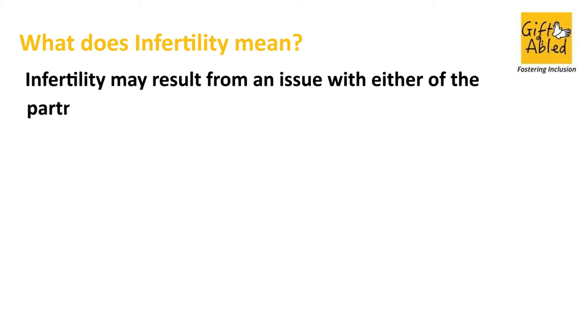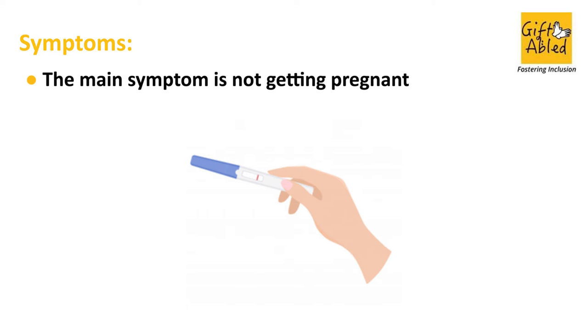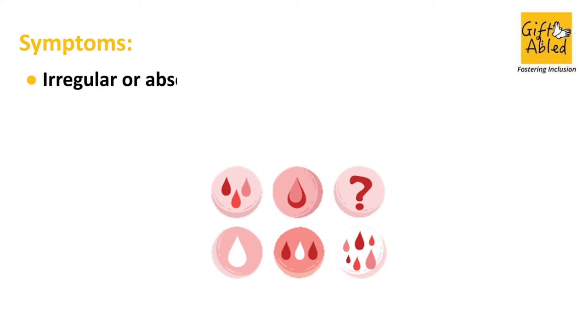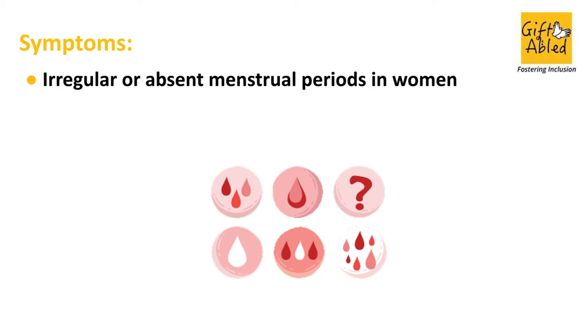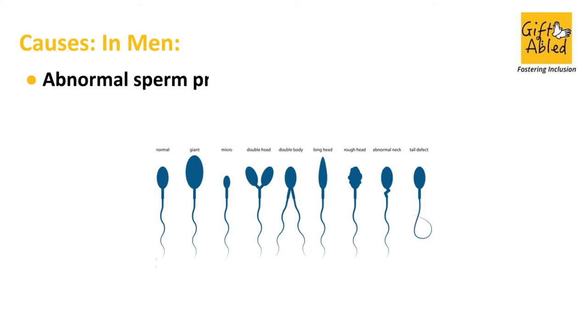Infertility may result from an issue with either of the partners, or a combination of both, that prevents pregnancy. Symptoms: the main symptom is not getting pregnant. Other symptoms include irregular or absent menstrual periods in women, and hormonal problems in men.